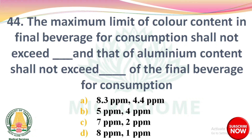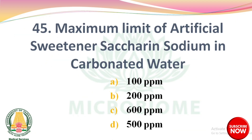Question 42: The maximum limit of color content in the final beverage for consumption shall not exceed dash, and the aluminum content shall not exceed dash — options: 8.3 ppm and 4.4 ppm, 5 ppm and 4 ppm, 7 and 2 ppm, 8 and 1 ppm. The right answer: option A, 8.3 ppm and 4.4 ppm. Question 43: Maximum limit of artificial sweetener saccharin sodium in carbonated water — options: 100 ppm, 200 ppm, 600 ppm, 500 ppm. The right answer: option A, 100 ppm.